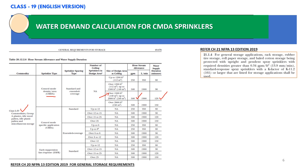As per NFPA 13 chapter 21, section 21.1.4, if our design density is greater than 0.34 gpm per square feet — and in our case it is 0.57 gpm per square feet — we have to use standard response spray sprinklers with a K-factor of 11.2 or larger that are listed for storage applications. Based on our scenario, we need to go ahead with K 11.2 or a higher K-factor.